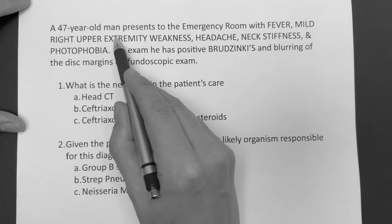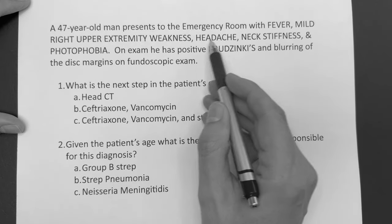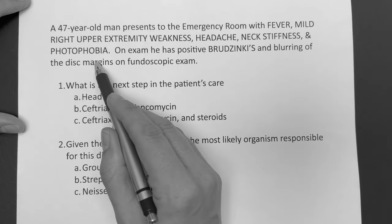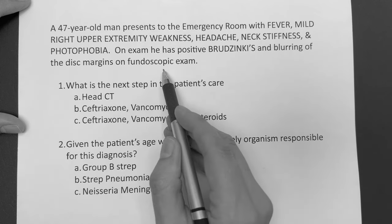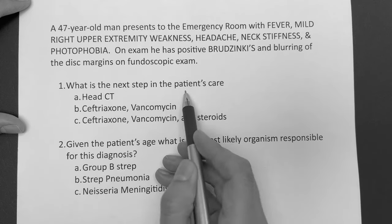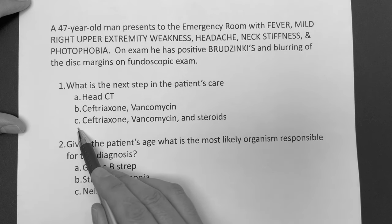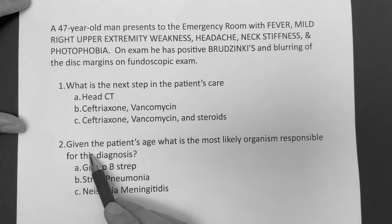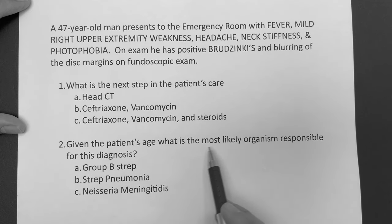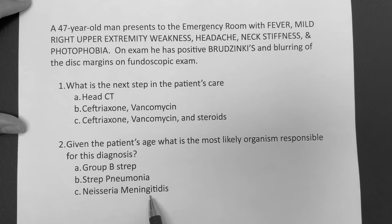A 47-year-old man presents to the emergency room with fever, mild right upper extremity weakness, headache, neck stiffness, and photophobia. On exam, he has positive Brzezinski's and blurring of the disc margins on fundoscopic exam. What is the next step in the patient's care? Is it A, head CT; B, ceftriaxone and vancomycin; or C, ceftriaxone, vancomycin, and steroids? And then: given the patient's age, what is the most likely organism — group B strep, strep pneumonia, or Neisseria meningitidis?